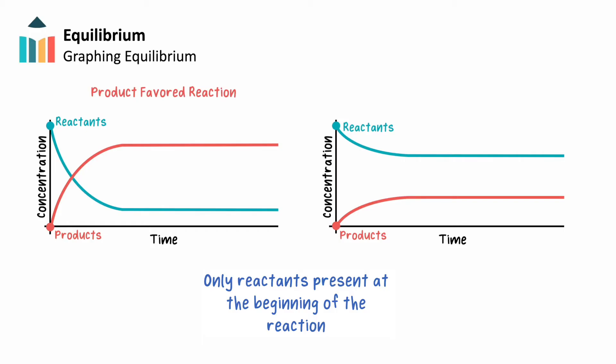In a product favored reaction, we see the number of products surpasses the number of reactants. In a reactant favored reaction, we see that although the number of reactants decreases, there are always more reactants than products in our system.